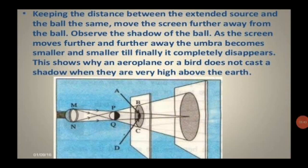The umbra becomes smaller and smaller till finally it completely disappears. This shows why an aeroplane or a bird does not cast a shadow when they are very high above the earth.